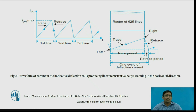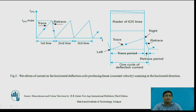This graph shows current versus time — this is a horizontal current. This diagram shows the waveform of current in the horizontal deflection coil producing linear scanning in the horizontal direction. For the first line it starts from 0 and reaches to the maximum IH, after which it suddenly drops down to 0. Starting from 0 to maximum, this path is called the trace path; from maximum back to 0 is called the retrace path.